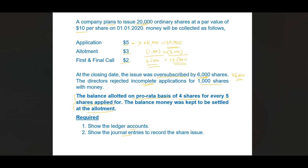Now 25,000 applications remain and the money remaining with the company is $125,000. The company has made a decision to allot these shares on a pro rata basis of 4 shares for every 5 shares applied for. Those who applied for 5 shares were given 4 shares. So 25,000 divided by 5 times 4 = 20,000 shares were allotted.